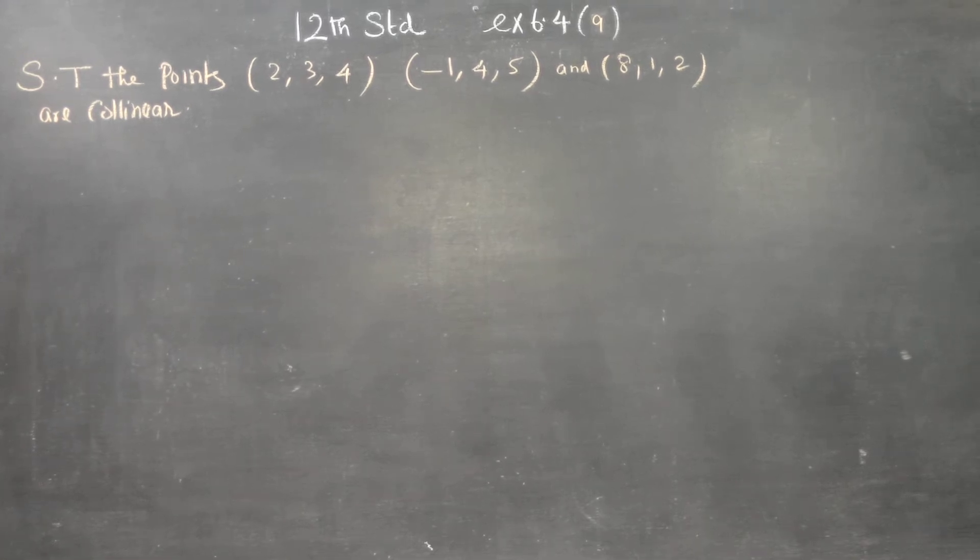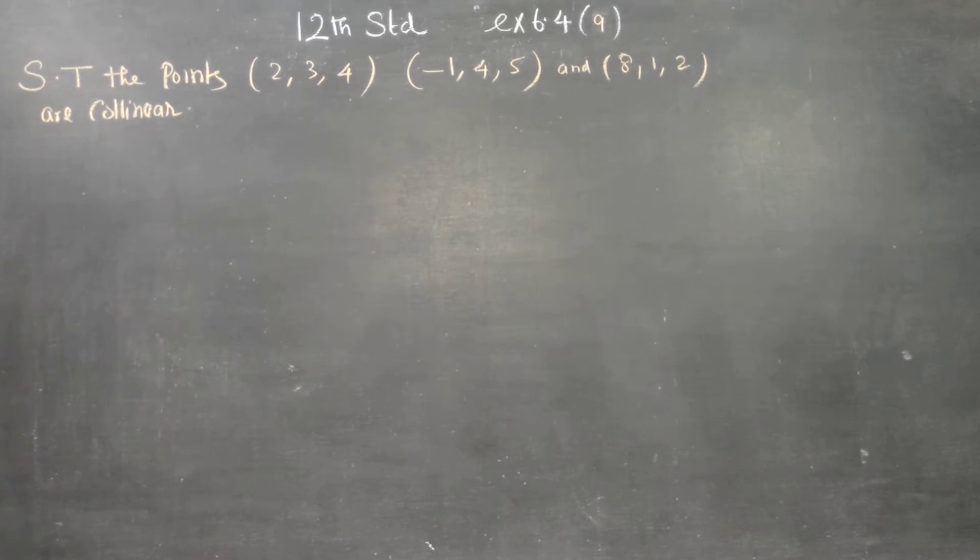Dear 12 standard students, in exercise number 6.4, sum number 9, vector algebra, show that the points are collinear.